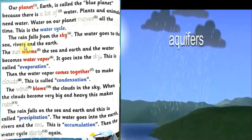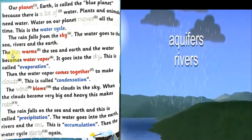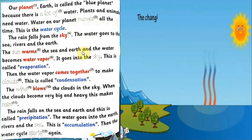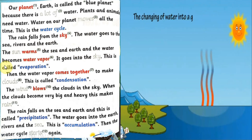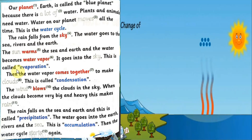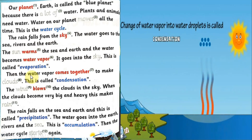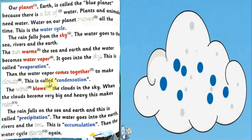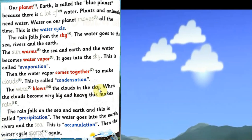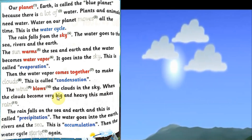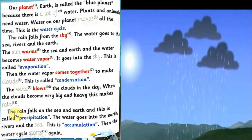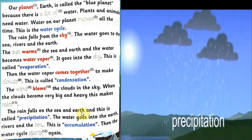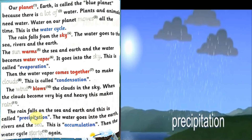The water goes to the sea, rivers and the earth. The sun warms the sea and earth and the water becomes water vapor. It goes into the sky. This is called evaporation. Then the water vapor comes together to make clouds. This is called condensation. The wind blows the clouds in the sky. When the clouds become very big and heavy, this makes rain.